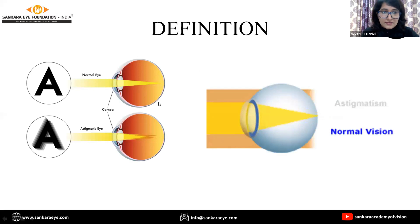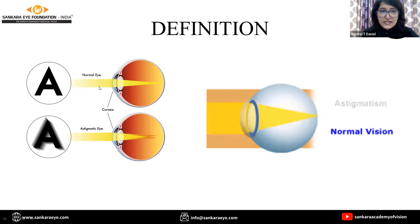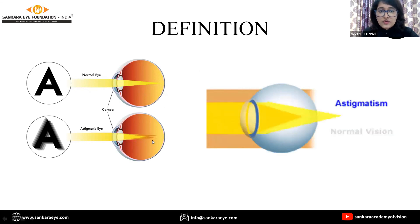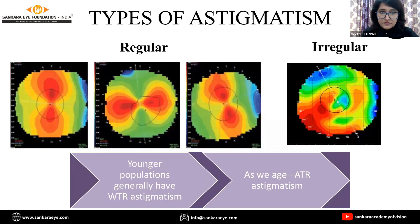I'll start out with defining astigmatism, which is a refractive error where the parallel rays of light coming from infinity don't come to a point focus. Instead, they form two focal lengths, due to which the patient perceives blurred vision. There are two types of astigmatism: regular astigmatism and irregular astigmatism.